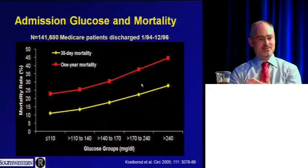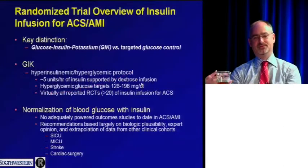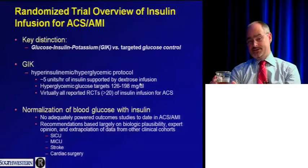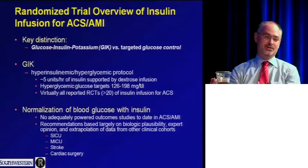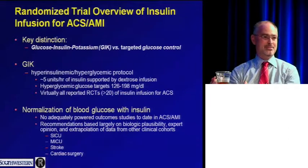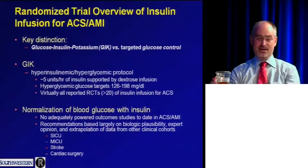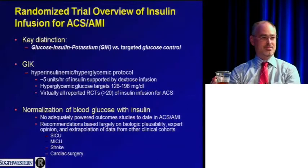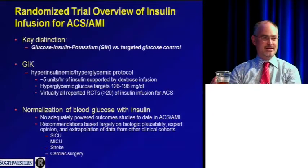Hyperglycemia also portends adverse mortality. Whether you look at 30 days or one year, it's very clear that hyperglycemia marks cardiovascular risk — and it begs the question: should it be a target of therapy? That question remains unproven. Almost all cardiology research with glucose in acute coronary syndromes has used hyperinsulinemic, hyperglycemic protocols called glucose-insulin-potassium therapy, not targeted blood glucose control.